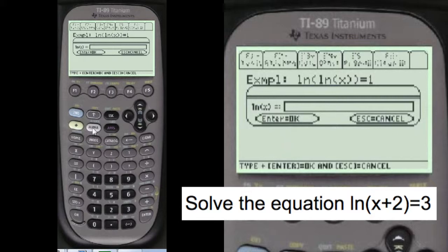We're going to enter the function. You have to press alpha before you enter anything into these entry lines here. We're going to enter alpha. Second log of x plus 2 equals 3.